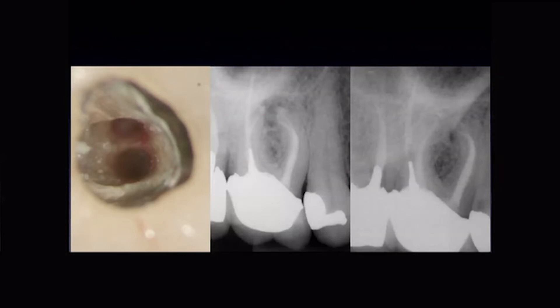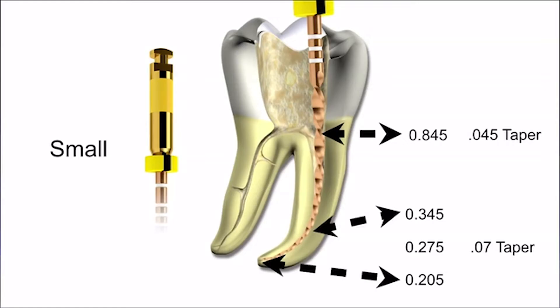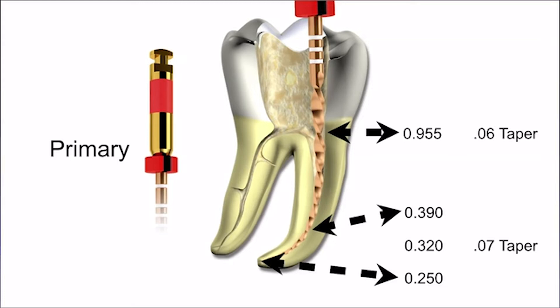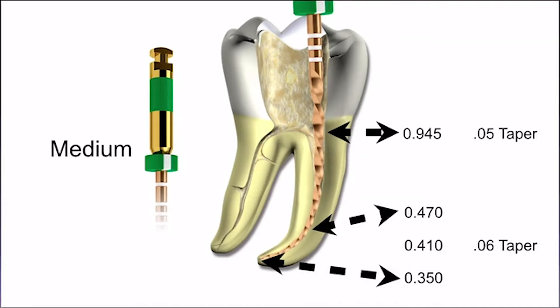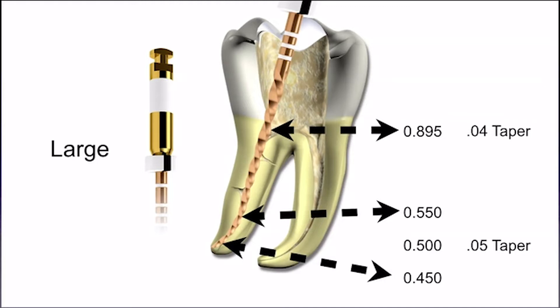The files come in four sizes. The small size, yellow, is approximately .20 diameter at the apex with a variable taper starting at .07 and decreasing to approximately .045 at D16. The primary file — used in the majority of cases — is .25 at the apex, with taper starting at .07 decreasing to .06. The medium file, used when the red file reaches the apex too quickly, is .35 with a .06 taper decreasing to .05 at D16. The large file, used mostly in distal and palatal canals, has a taper from .05 to .04 and a diameter of .45 at the apex.